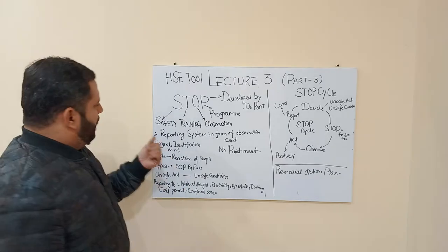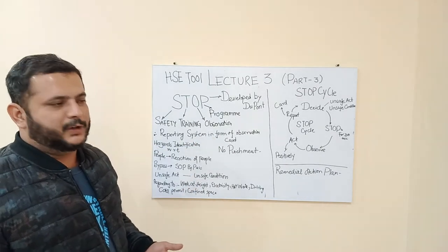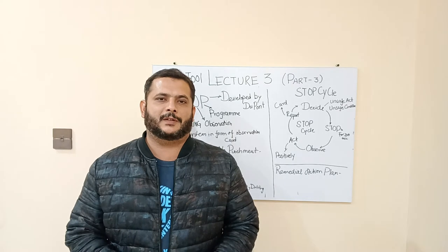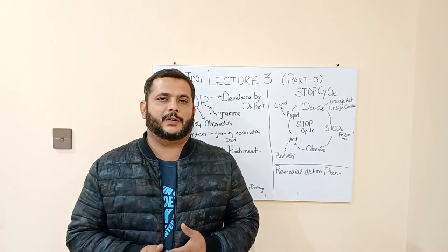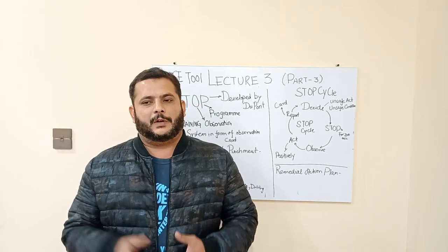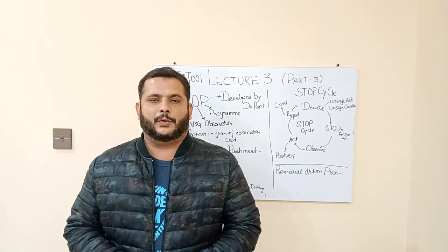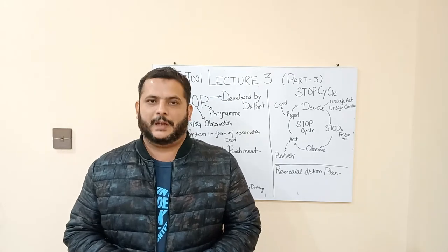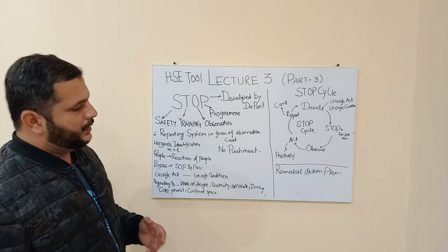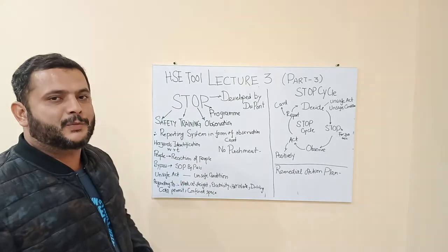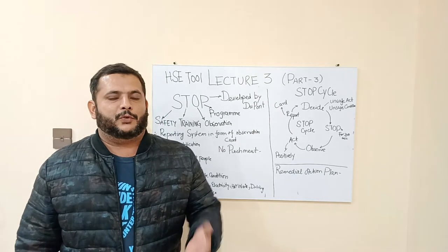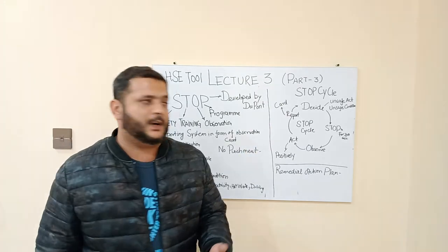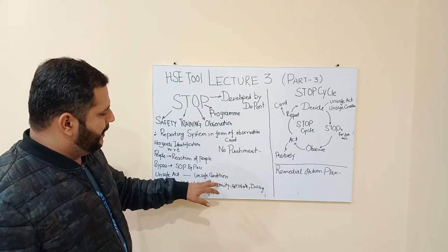STOP is a reporting system in the form of an observation card. Whenever you observe anything wrong in an organization, the HSC management system has a written document format where you write what you observed and report it to senior authorities so they can take corrective action to prevent recurrence. In the STOP program, there are two important things to identify: unsafe acts and unsafe conditions.